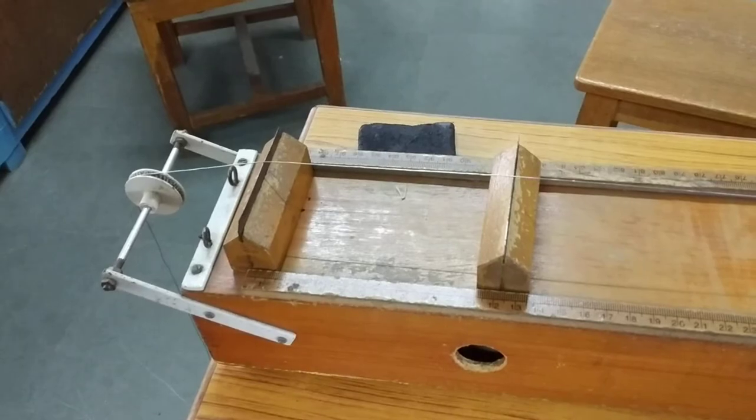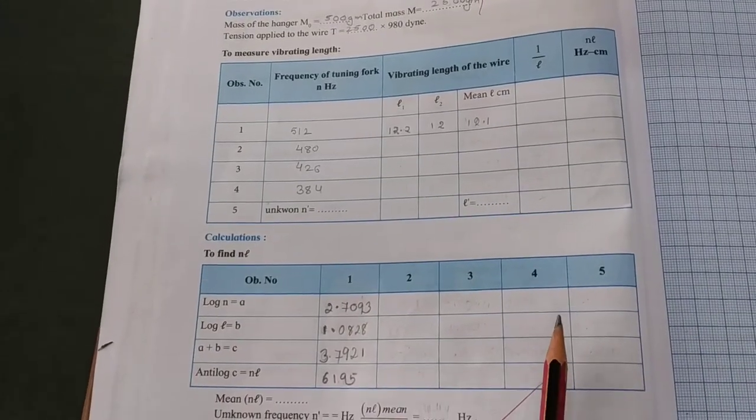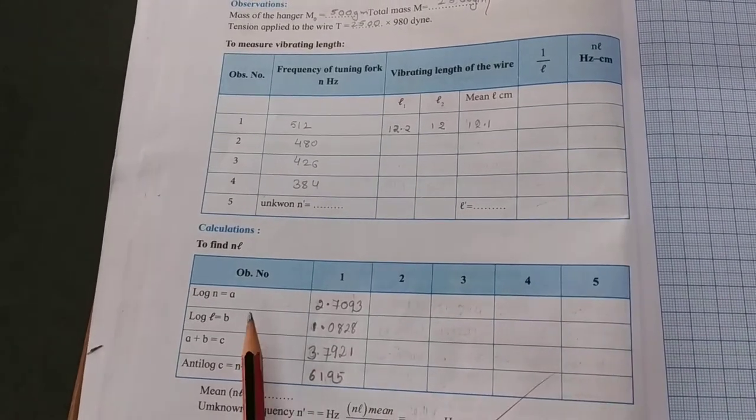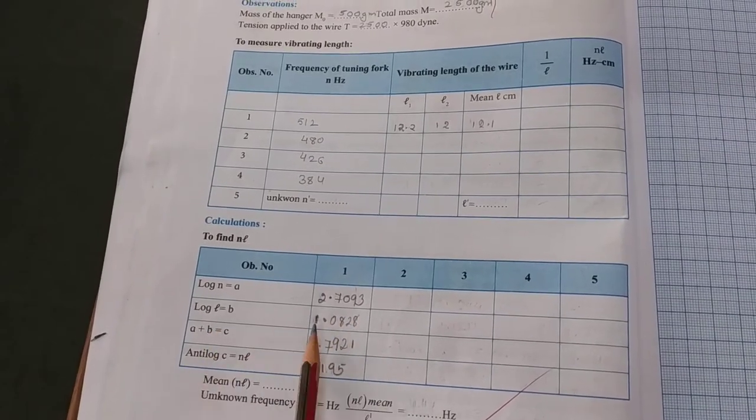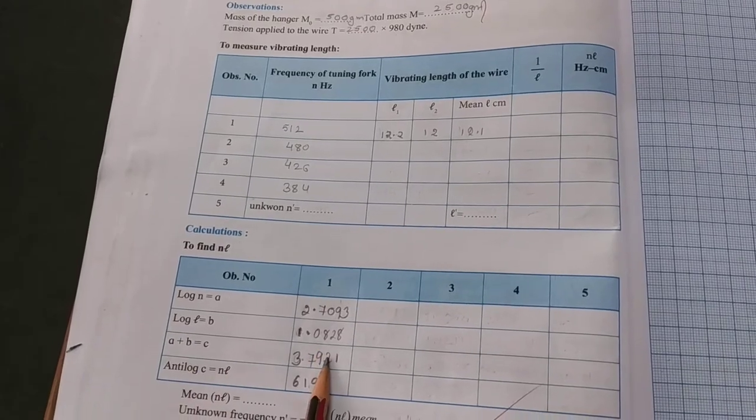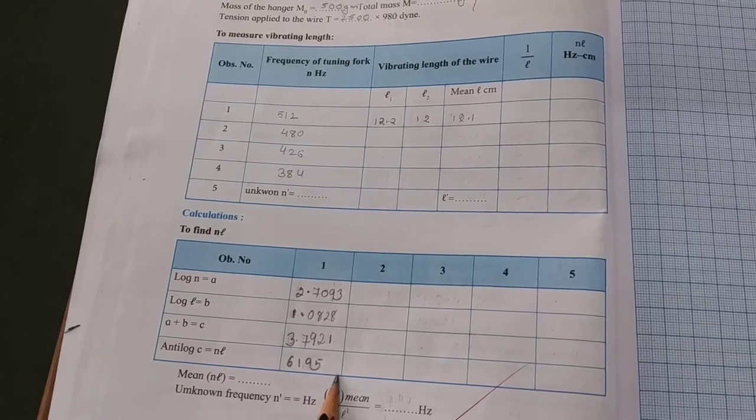Let us find and write down the reading. Let us calculate the n into l, the frequency into the length. Log of n is 2.7093, log of l is 1.0828, add this to get 3.7921, nl comes out to be 6195.